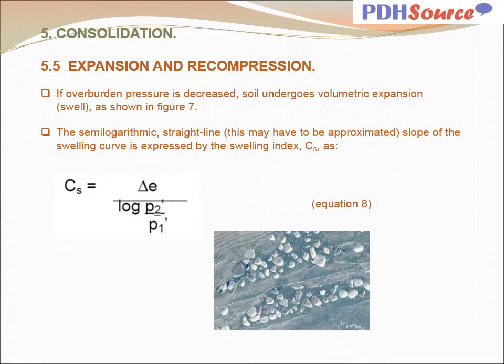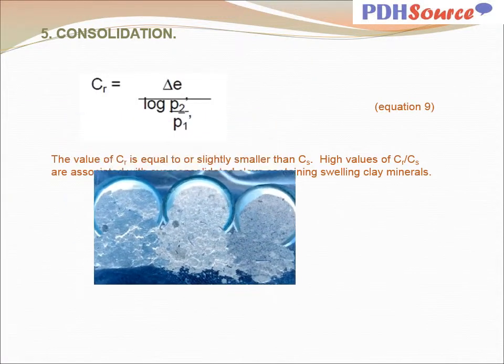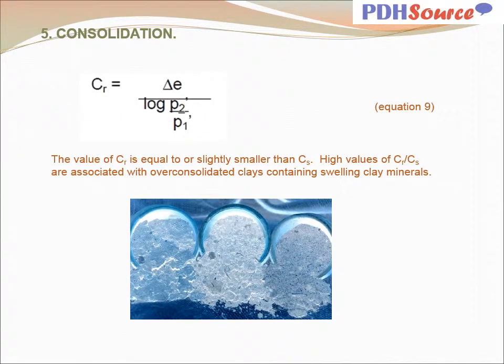If overburden pressure is decreased, soil undergoes volumetric expansion — swell — as shown in Figure 7. The semi-logarithmic slope of the swelling curve is expressed by the swelling index C sub S, as indicated by equation 8. The value of CR is defined by equation 9 and is equal to or slightly smaller than C sub S. High values of the ratio CR divided by C sub S are associated with over-consolidated clays containing swelling clay minerals.